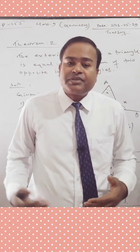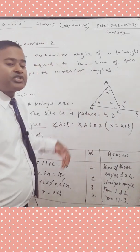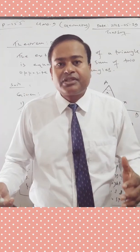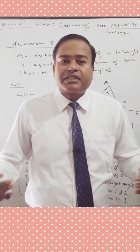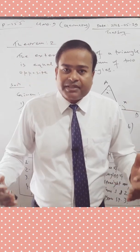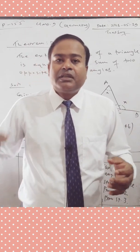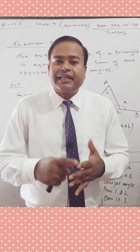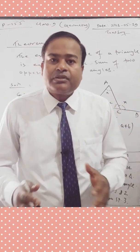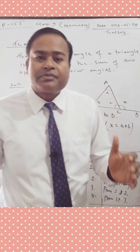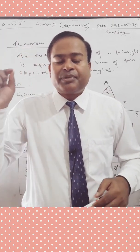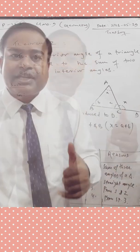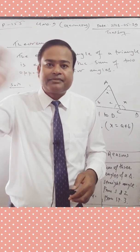So Theorem 2 is proved — the exterior angle of a triangle equals the sum of the two opposite interior angles. It is very simple and I hope you have understood it. Thank you for watching. In the next video we'll cover the next topic. If you haven't subscribed to Karnamass Academy on YouTube, please subscribe and press the bell icon to get regular updates on mathematics solutions for classes 8 through 12. Have a nice day, bye bye!